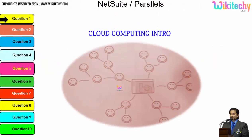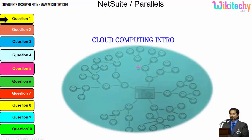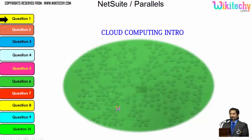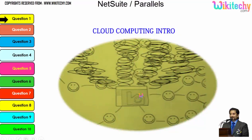Let's talk about the cloud computing intro. This is a computer which is connected to the server, and this server is monitoring this computer. Once the network becomes bigger, the monitoring becomes tougher. If more computers are added, the network gets really bigger and the monitoring system becomes really slow. There is also a possibility that the network crashes or the server couldn't monitor specific networks.